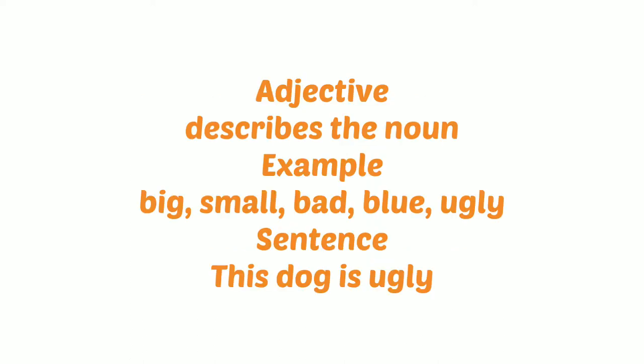Number five, adjective. Adjective is which describes a noun. For example, big, small, bad, ugly. The sentence is: the stock is ugly. In the sentence, ugly is adjective.